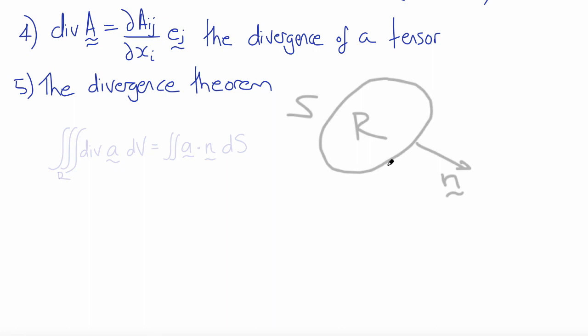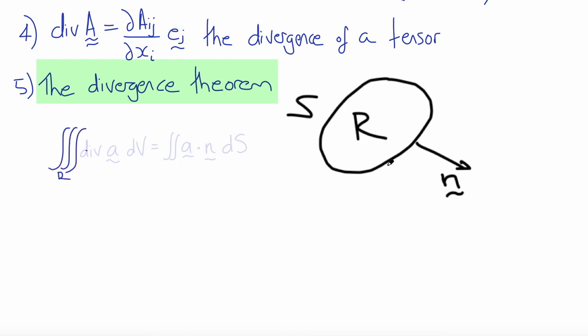Another operation related to divergence is the divergence theorem. The divergence theorem states that the integral of the divergence of a vector field over a three-dimensional region R can be related to the dot product of that vector field and the outward normal n integrated over the surface. So the triple integral of div A with respect to volume over R equals the surface integral of A dot n integrated over the surface. This tells us that the divergence of a vector field represents the amount of the vector escaping the surface — crossing normal to it. We can also apply the same theorem to the divergence of a tensor.